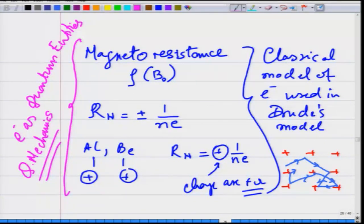The Drude model has certain limitations: primarily it treats the electron as a classical object and uses kinetic theory arguments to understand electron behavior. While it provides an intuitive way to understand resistivity, it cannot explain all the details of resistivity behavior across different materials.